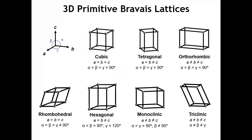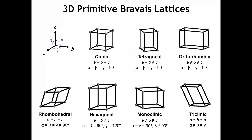When we go to the tetragonal lattice, the C lattice vector is of a different length than A and B, which leaves two of the six sides as squares but makes the other four sides rectangles. And when we go to the orthorhombic Bravais lattice, the three lattice vectors are all three of different lengths, so all six faces of the unit cell become rectangles.